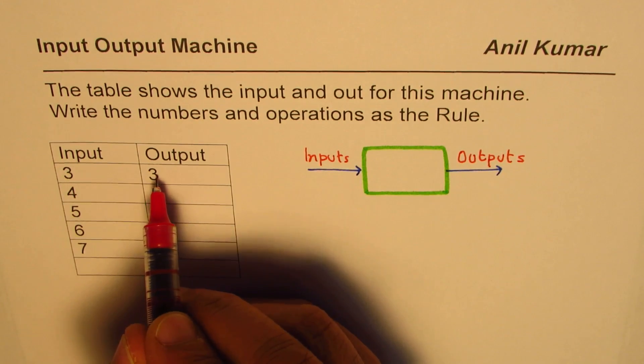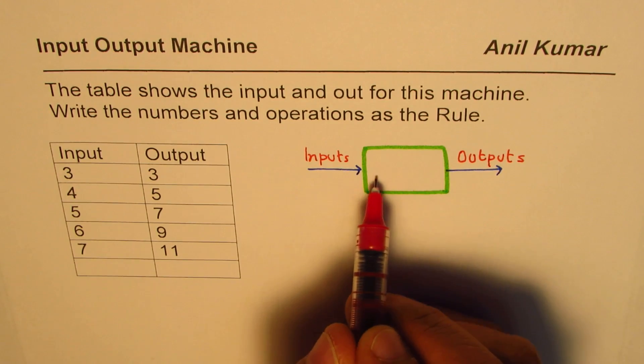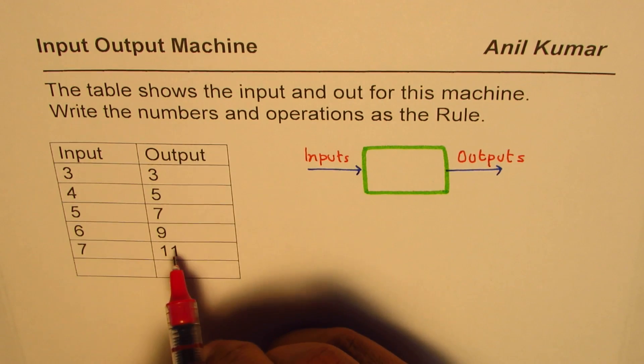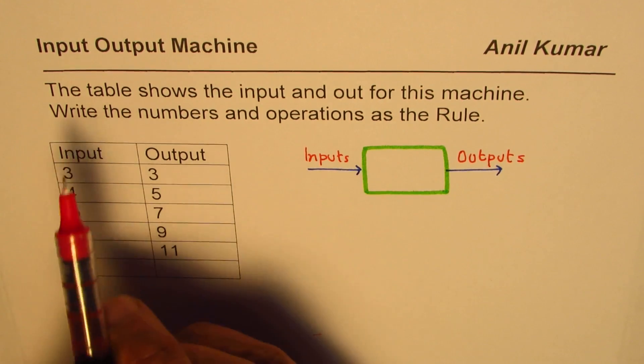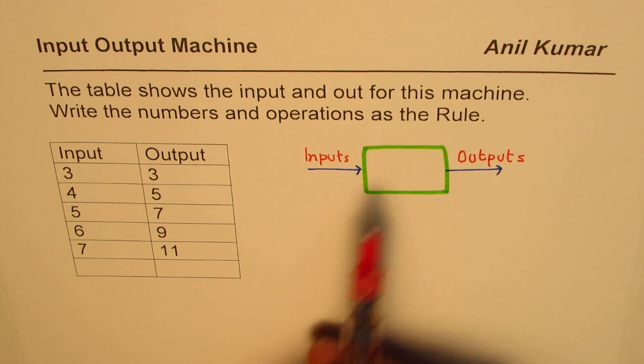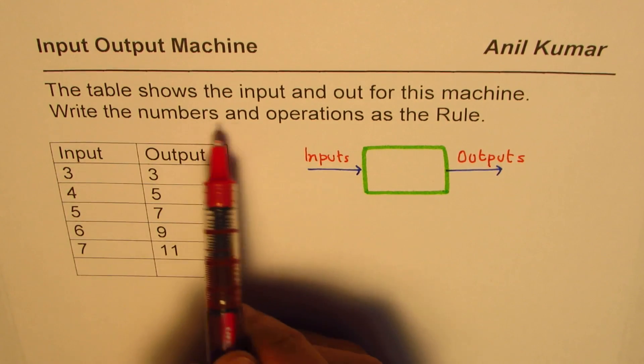We need to find the operations which the machine performs so that we get the required output. So the question here is: the table shows the input and output for this machine, write the numbers and operations as the rule.